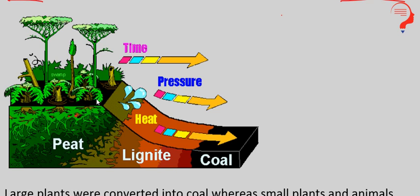Dhire dhire time ke saath, jaise jaise pressure badhta jaata hai, carbon content increase hota hai, kyunki oxygen toh atmosphere mein hai, andar nahi hai — toh yahan pe carbon content milkar, oxygen ke absence mein, heat aur pressure ki wajah se, woh lignite ke form mein aa jaate hain, aur phir lignite se dhire dhire coal ke form mein aa jaate hain. Yeh pura process hone mein bahut zyada time lagta hai — thousands and lakhs of years cross ho jaate hain, tab jaa ke yeh pura formation create ho paata hai.